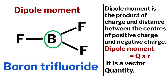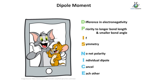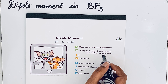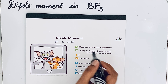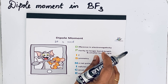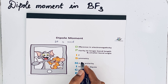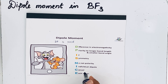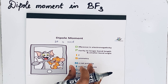The mnemonic is: DP IS NICE. D stands for difference in electronegativity. P stands for priority to longer bond length and smaller bond angle. I stands for 'if symmetry.' S stands for 'no net polarity' — individual dipoles cancel each other. That means greater electronegativity difference, longer bond length, and smaller bond angle make the dipole moment greater. But if there is symmetry, there is no net polarity.